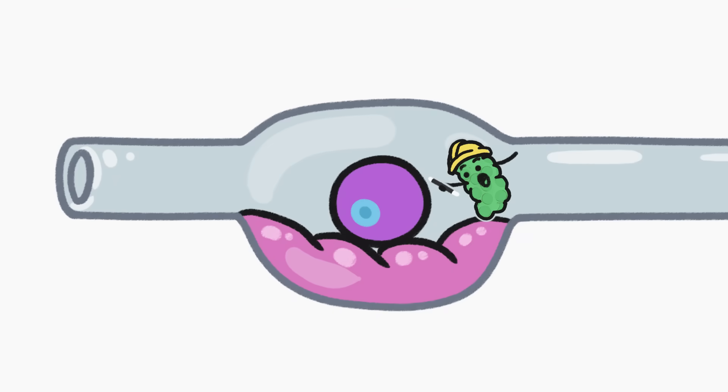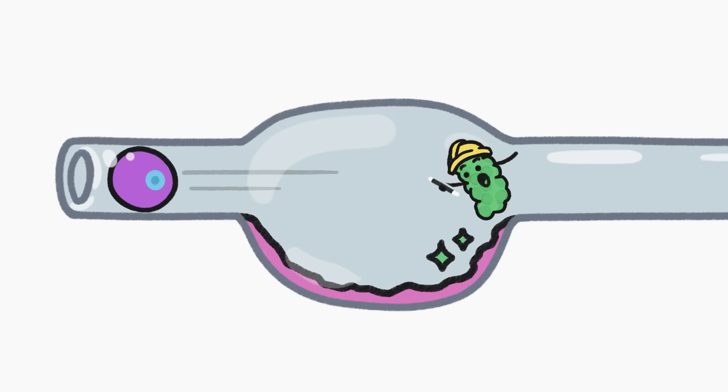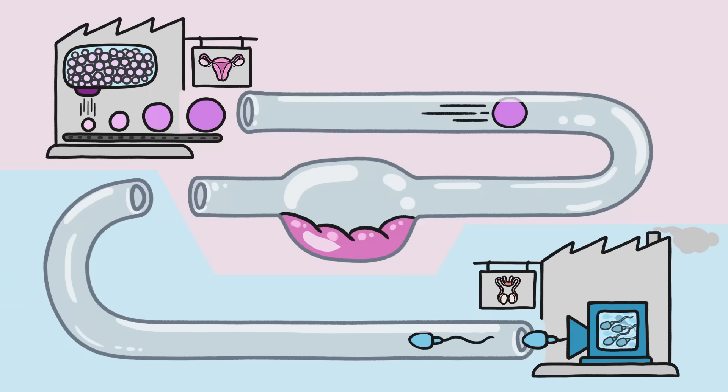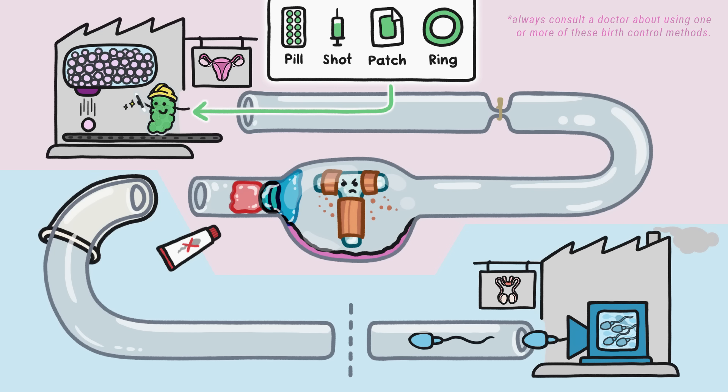Their hormones turn the cozy bed of tissue a fertilized egg would normally implant on into a thin, unwelcome mat that offers basically no way to stay attached. In other words, if you don't want to get pregnant, there are a lot of different ways to interrupt the process, from production to implantation.